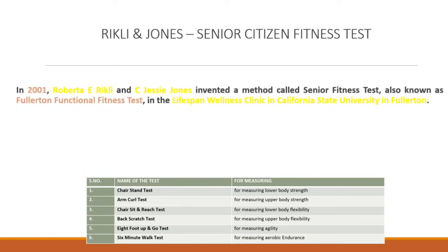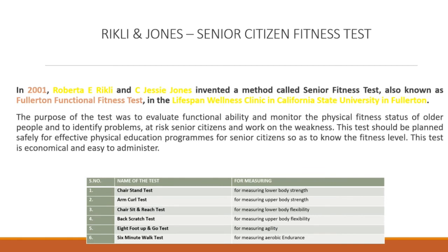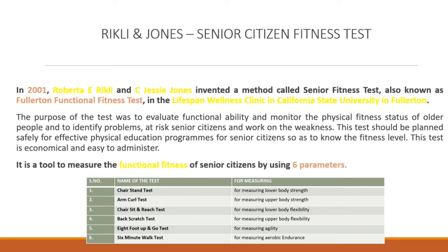Rikli & Jones Senior Citizen Fitness Test. In 2001, Roberta E. Rikli and C. Jessie Jones invented a method called the Senior Fitness Test, also known as the Fullerton Functional Fitness Test, at the Lifespan Wellness Clinic in California State University in Fullerton. The purpose of the test was to evaluate functional ability and monitor the physical fitness status of older people, and to identify problems and at-risk senior citizens. This test is economical and easy to administer. It is a tool to measure the functional fitness of senior citizens using 6 parameters.